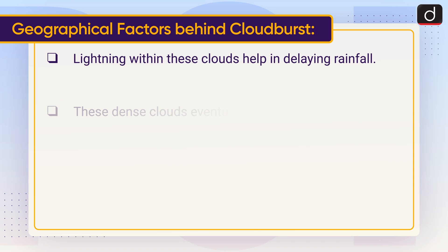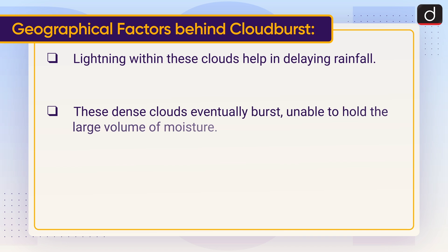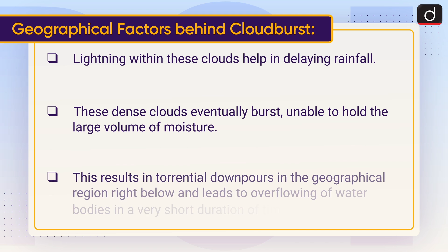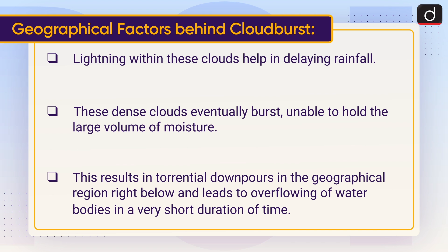Lightning within these clouds helps in delaying rainfall. These dense clouds eventually burst, unable to hold the large volume of moisture. This results in torrential downpours in the geographical region right below, leading to overflowing of water bodies in a very short duration of time.